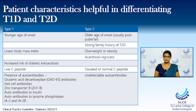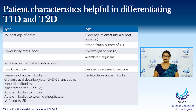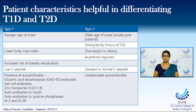Presence of autoantibodies in patients with type 1 will give us a clue on their type 1 diabetes. Antibodies such as glutamic acid decarboxylase, GAD65 antibodies, islet cell antibodies, ZINC transporter 8 antibodies, autoantibodies to insulin, autoantibodies to tyrosine phosphatase, IA2 and IA2 beta antibody presence will point you more towards a diagnosis of type 1, whereas the absence of these antibodies will point you towards type 2.